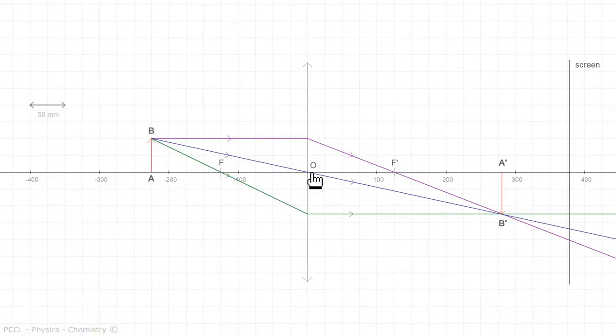A little vocabulary. Here is the symbol of the lens. This particular point, which is the optical center, is the origin of the principal axis, which is an axis oriented in the direction of propagation of light, so in my example to the right, and graduated according to a chosen scale.